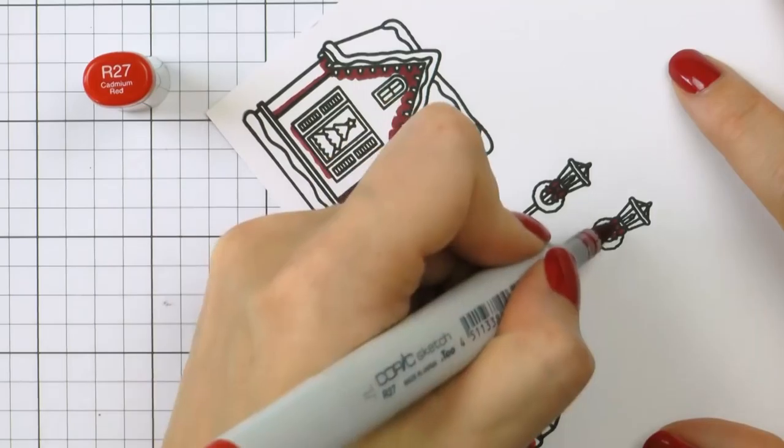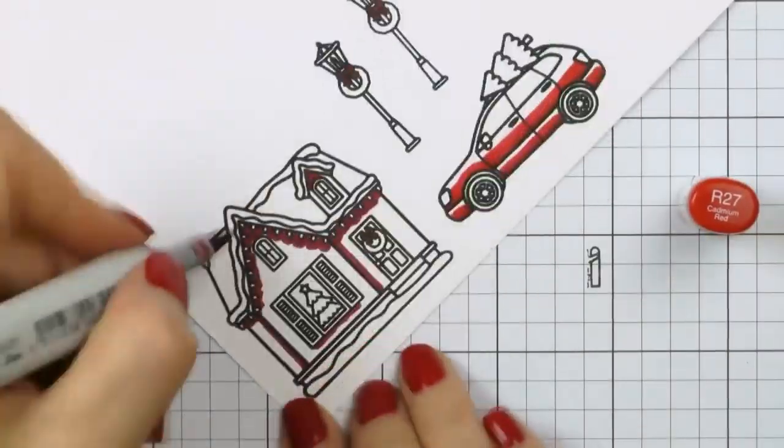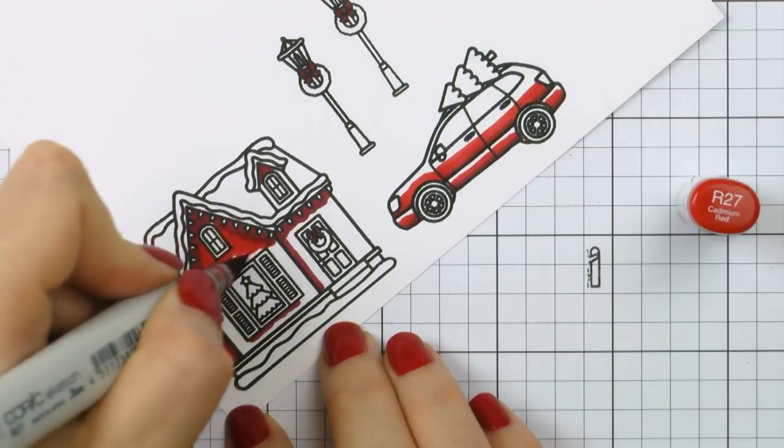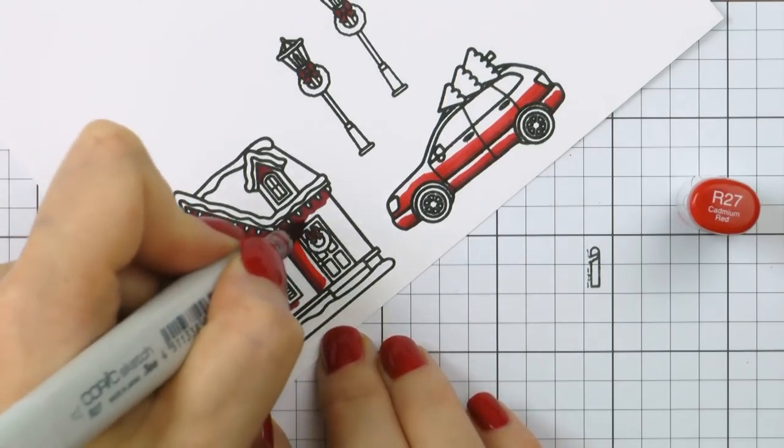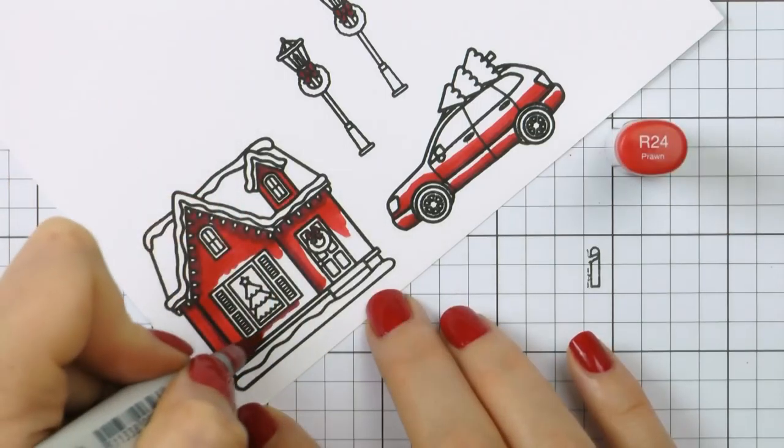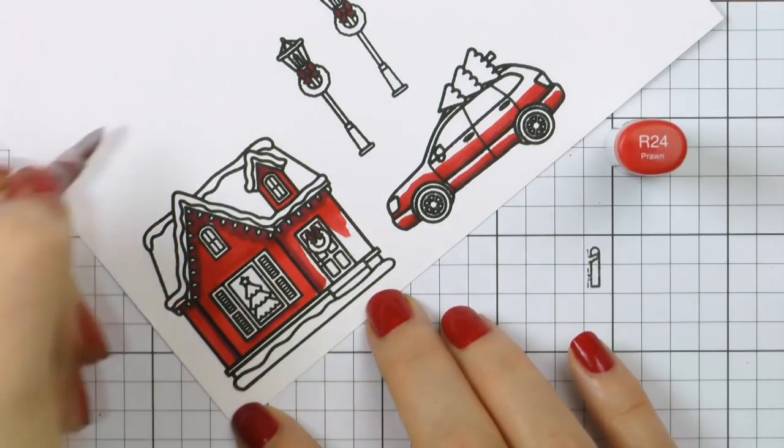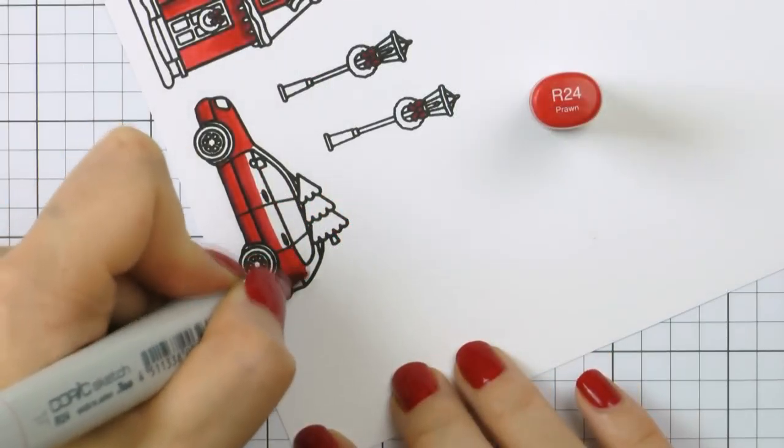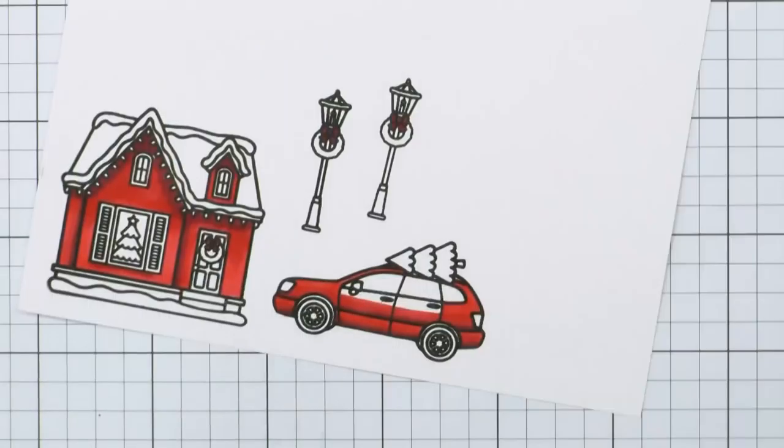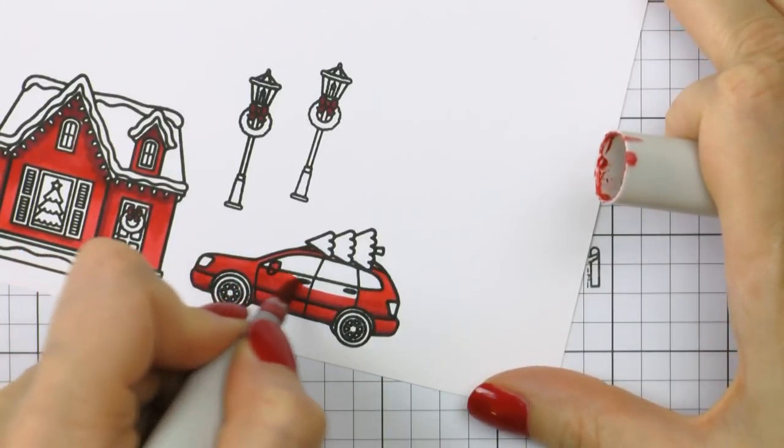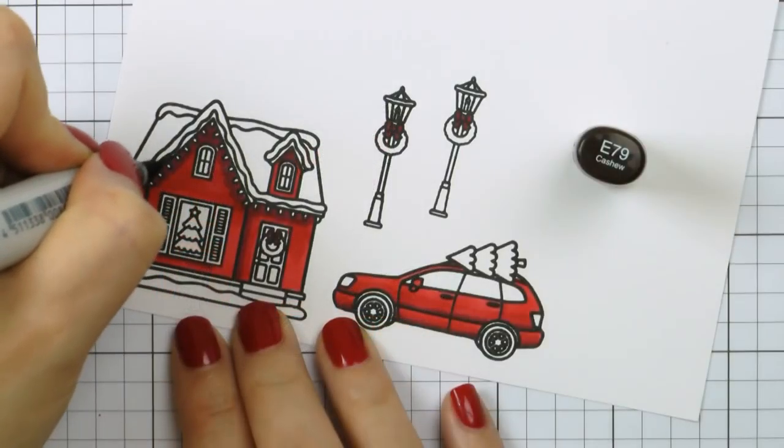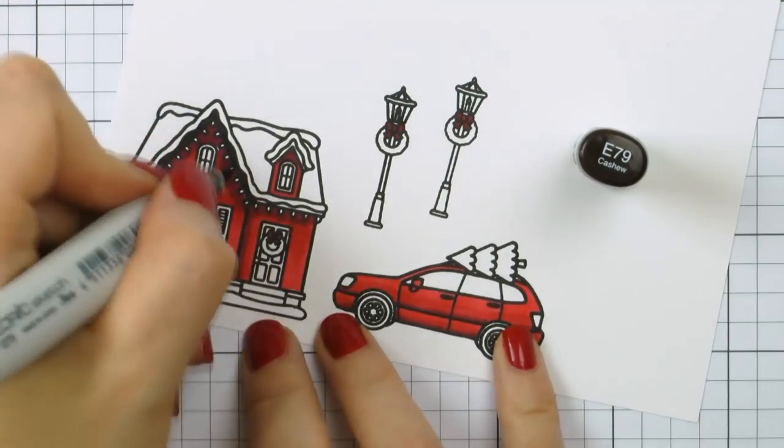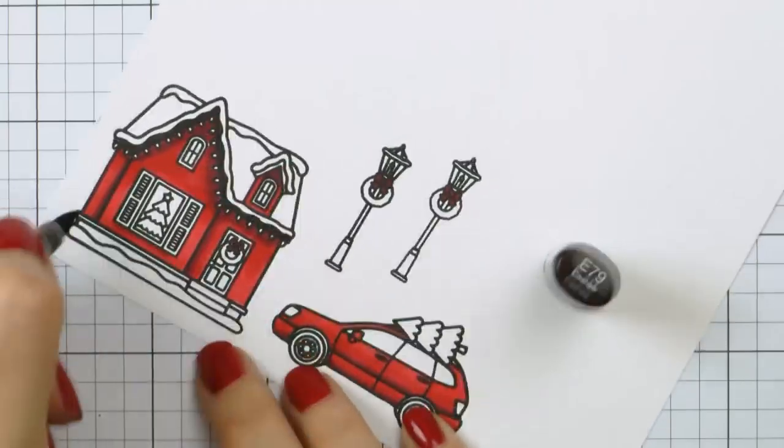Whenever I color I always try to color in groups. So I would color all images or all parts of the images using one color first. Here I'm coloring all using reds, and for this I use three markers: R39, R27, and R24. Now I don't have a lot of Copics, I have just a handful and I pretty much always use the same color combos when I color. This works really well for me and I always remember what combos work and what do not work.